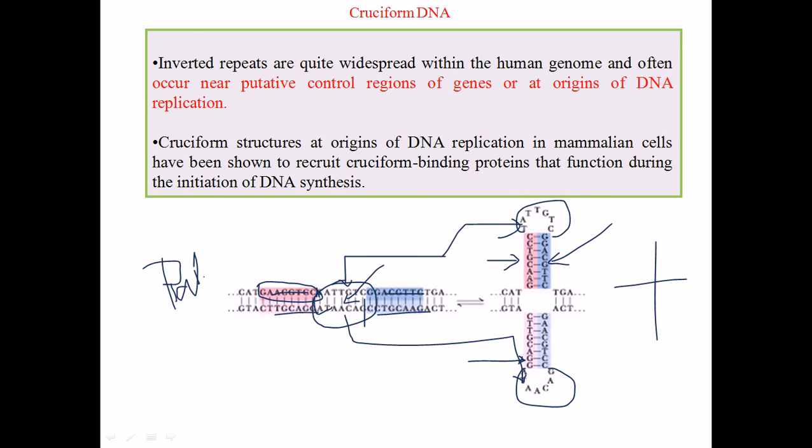Now cruciform structures are very important at the origin of DNA replication. We can find more and more cruciform structures in the start point of DNA replication in mammalian cells, and have been shown to recruit different types of proteins, new types of proteins which are called cruciform binding proteins to start the replication process.